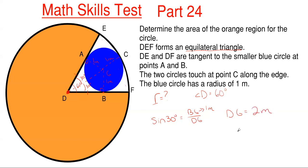So to get our overall radius, we would just add this DG to the one meter from G to C, and that would end up being three meters for our radius.